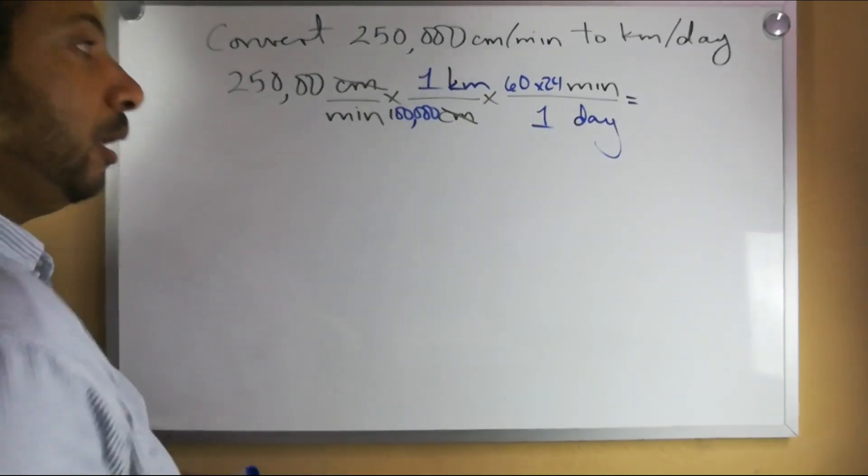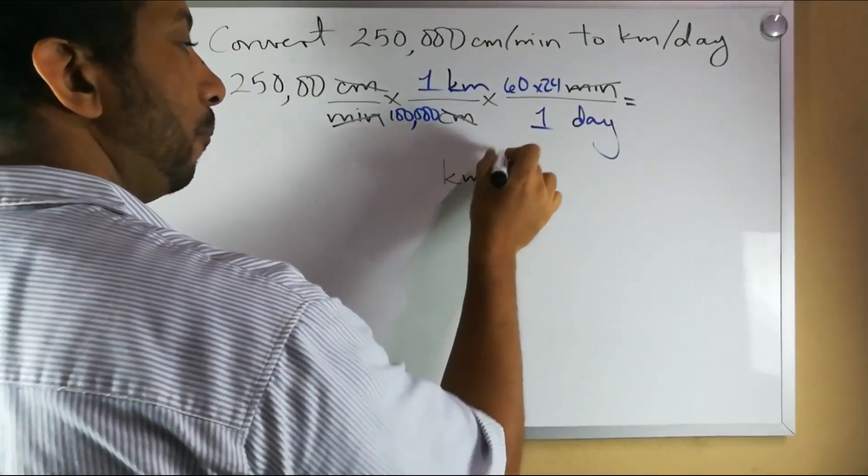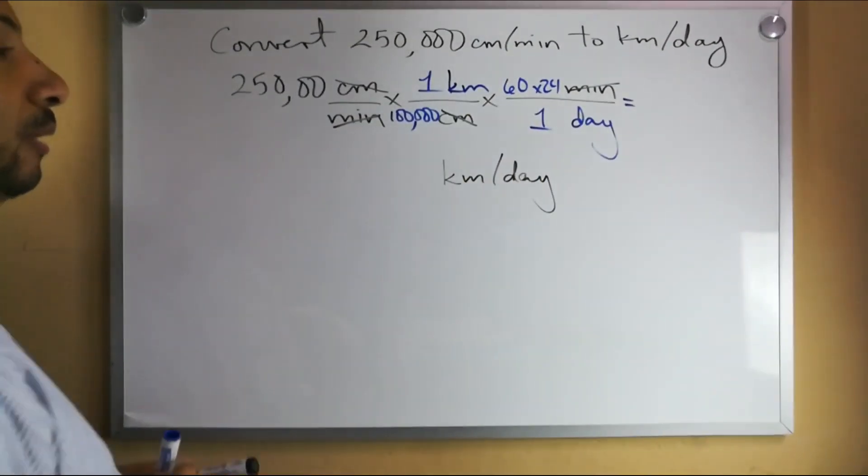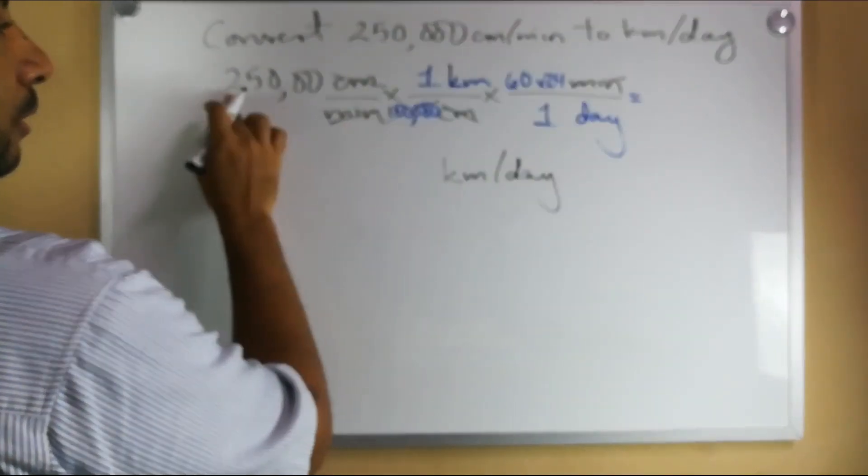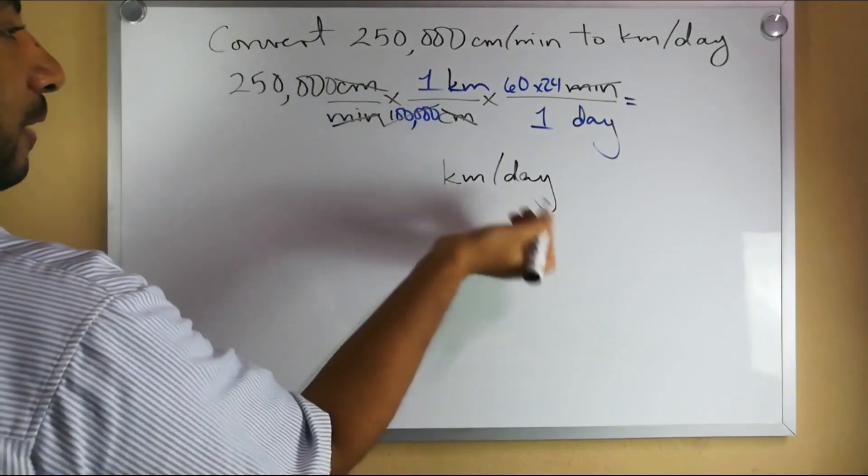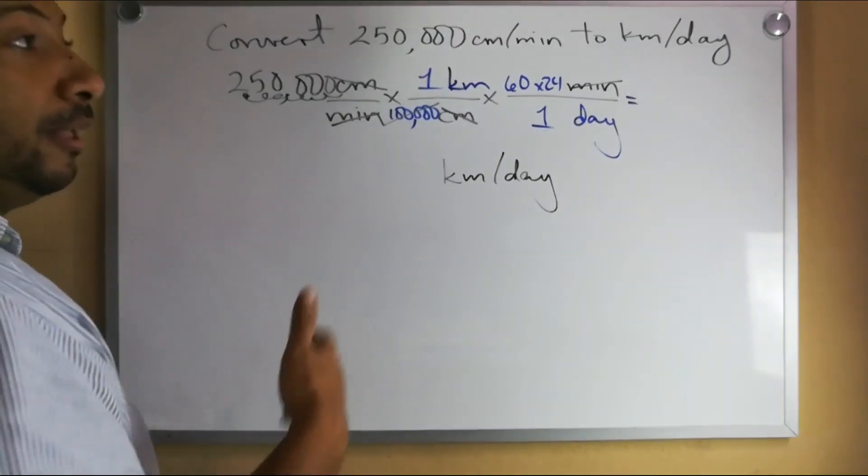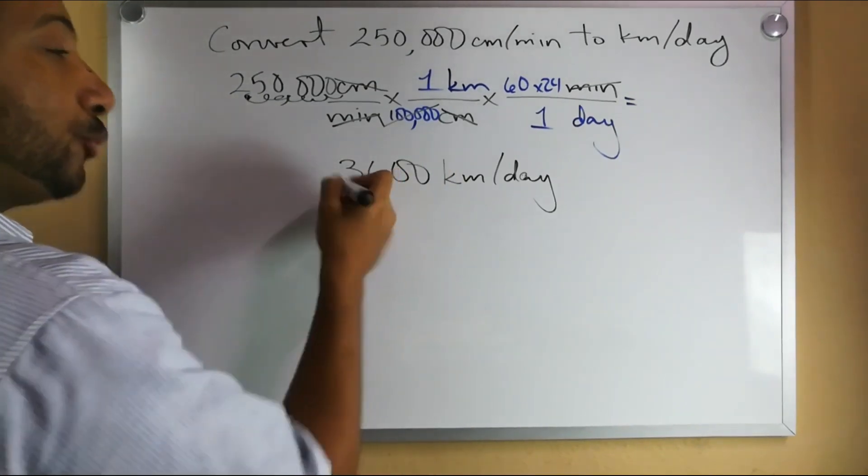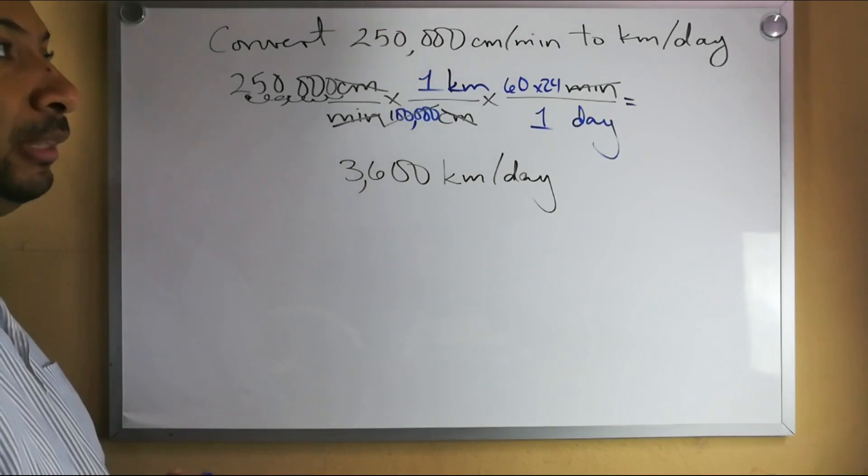When we're working now then what will happen? Our centimeters are going to cancel out, our minutes are going to cancel out, and we're left with kilometers per day which is what we want to find. Then the next thing to do is just simply to multiply out this. So we're going to divide by 100,000. I can just say, divide by 100,000, this is 250,000, so if I divide by 100,000 that's 2.5, and I'm left with 2.5 times 60 times 24, and 2.5 times 60 times 24 gives me 3600.